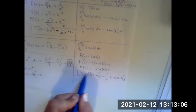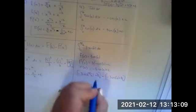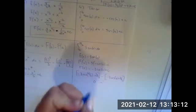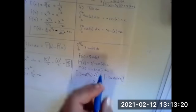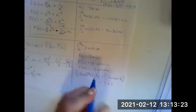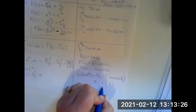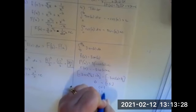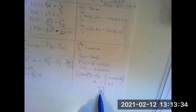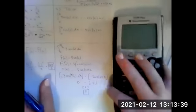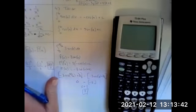Let's evaluate. Cosine of pi over two is zero, so negative three times zero is zero — that whole expression simplifies to zero. Then cosine of zero is positive one, and positive one times negative three is negative three. So we have zero minus negative three, which is zero plus three, or three. The area under the curve from zero to pi over two of three sine of X dx is three. I'll show you how to check that in the calculator as well.